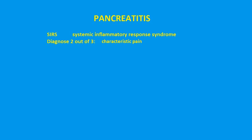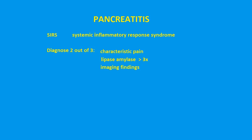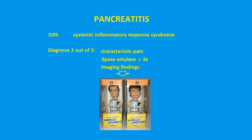The first characteristic is pain — usually epigastric, radiating to the back, worse when you sit up. The second is markedly elevated lipase and amylase. The third is imaging findings, which is where radiologists come into play and what this lecture is going to be about.